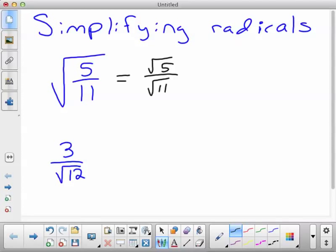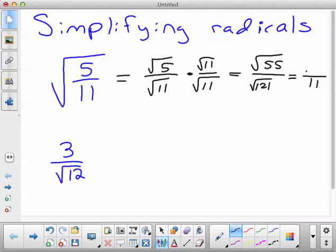And to get rid of the radical on the bottom, you just multiply by the square root of 11 on top and bottom by a form of 1. And so you'd have square root of 55 over the square root of 121, which we know the square root of 121 is 11. So you've got square root of 55 over 11, and you have a rational denominator.